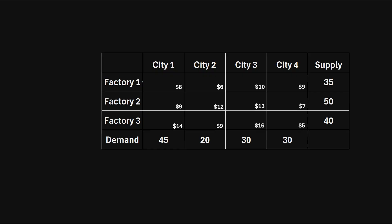For example, to ship one unit from factory one to city one, that's a shipping cost of $8 per unit. To go from factory one to city two, that has a shipping cost of $6 per unit, and so on.